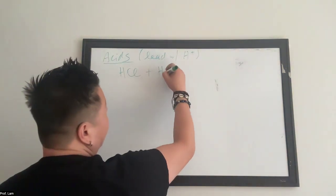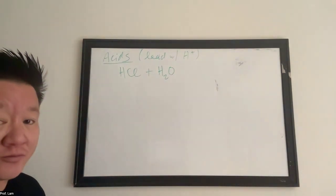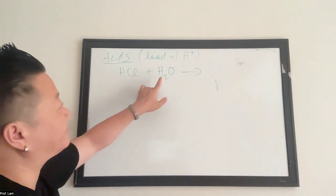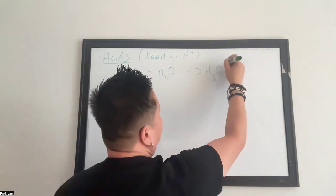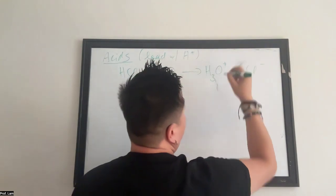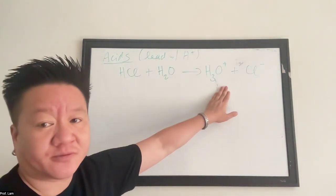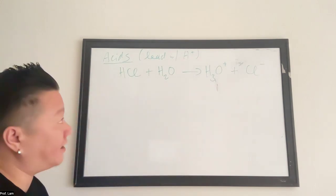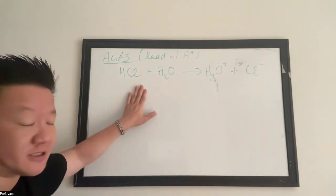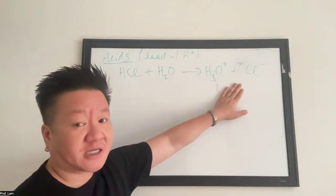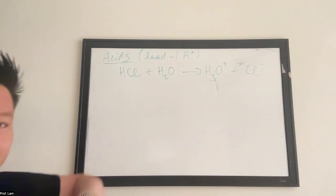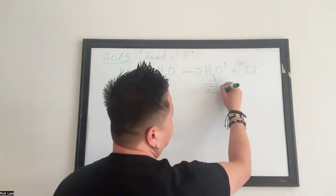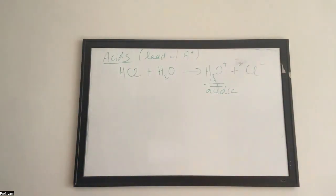When you put it in water, what happens is you'll get the creation of hydronium ions. Basically this proton moves to the water and you get hydronium and chloride. So hydronium is positively charged, one of your polyatomics, and then your chloride is negatively charged. It's charge balanced. The left side of the equation is neutral, the right side of the equation is neutral because you have a plus and a minus.